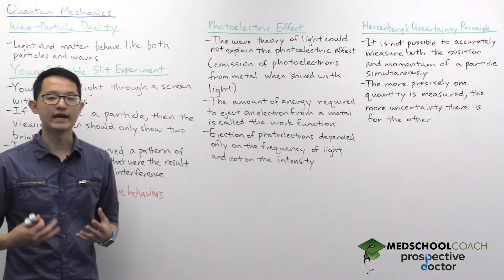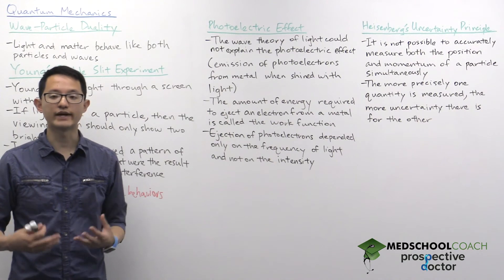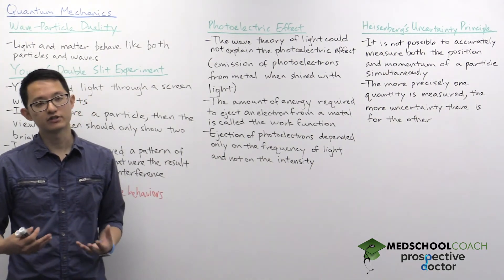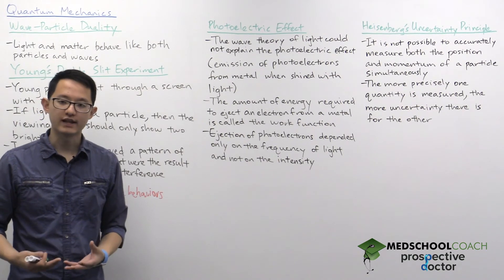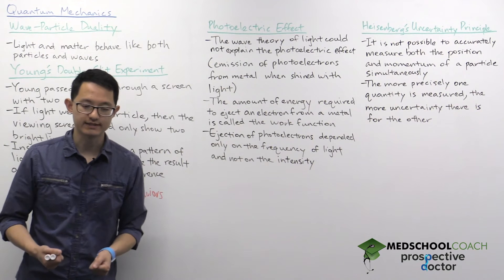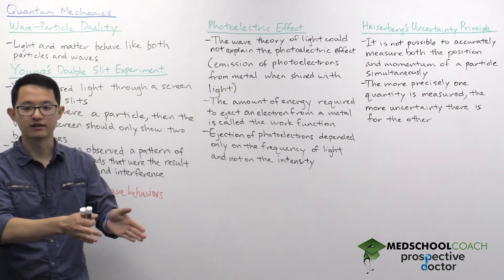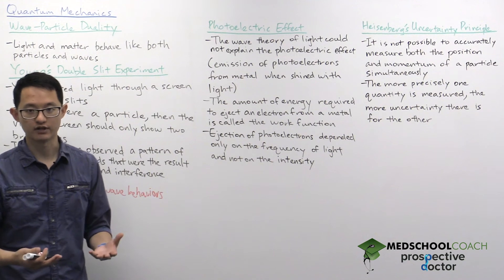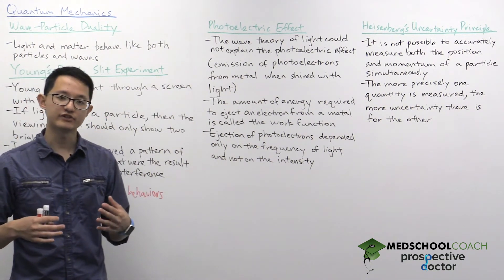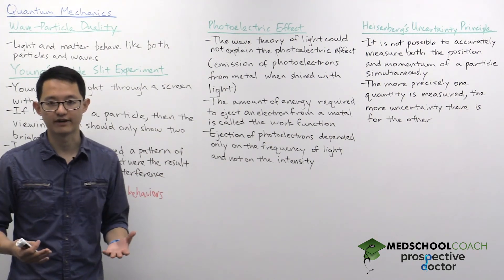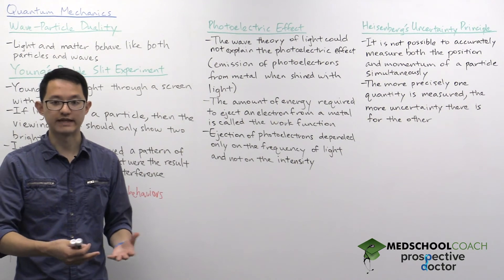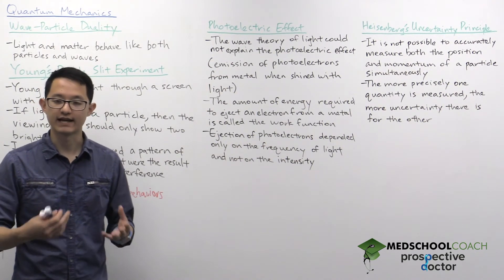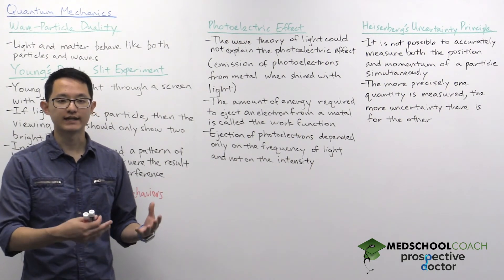Under the wave theory of light, the energy of light is dependent on its intensity — the brighter the light, the more energy it has. So we can make a few predictions. First, if you were to use dim light, you would expect a long delay before any photoelectrons are ejected, because dim light doesn't have enough energy. Another prediction is that if you use light of higher intensity with enough energy to eject a photoelectron instantaneously, even brighter light would have excess energy, and that excess energy would give the ejected photoelectron kinetic energy.